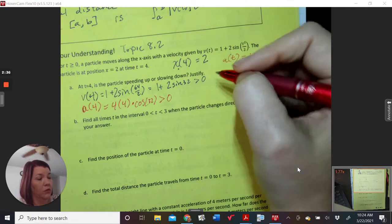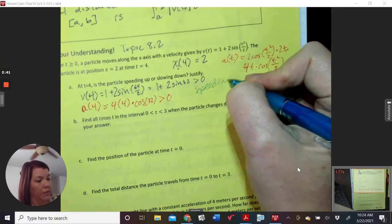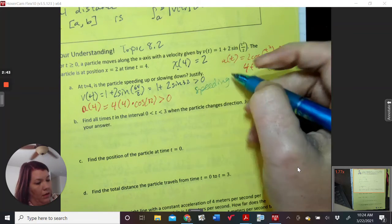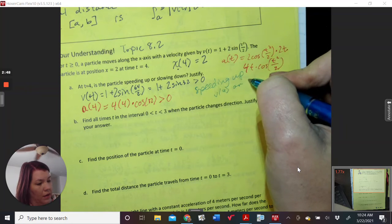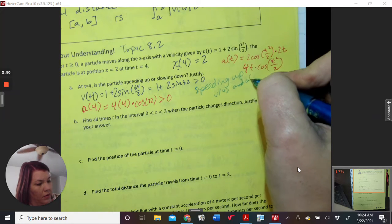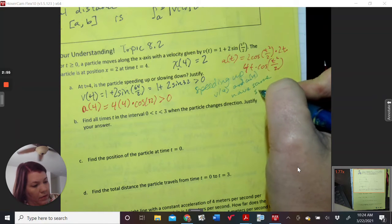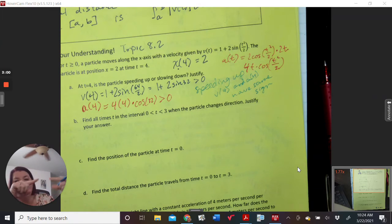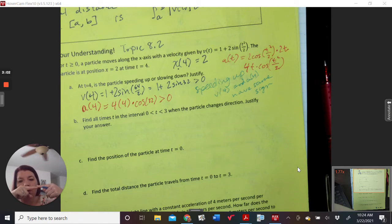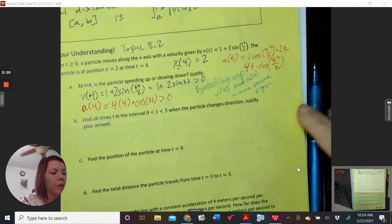And so speeding up or slowing down. Speeding up. Speed of 4 and a of 4 have the same sign. Slowing down when the signs are different. So if they're both, they're pushing each other, or they're pushing against each other. So this is slowing down. This is speeding up. This is speeding up.